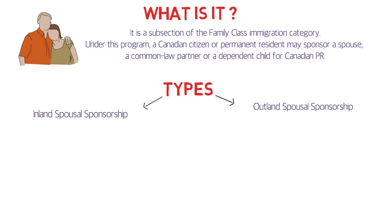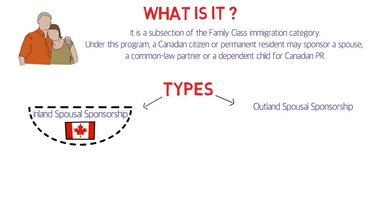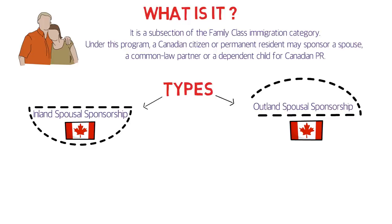Inland sponsorship is when the couple is together in Canada and the foreign spouse or common-law partner has temporary status in Canada — either as a worker, student, or visitor. The person being sponsored may be eligible for an open work permit while the application is in process. Outland sponsorship is when the sponsored partner is living outside of Canada, and unlike inland applicants, outland applicants cannot apply for an open work permit.